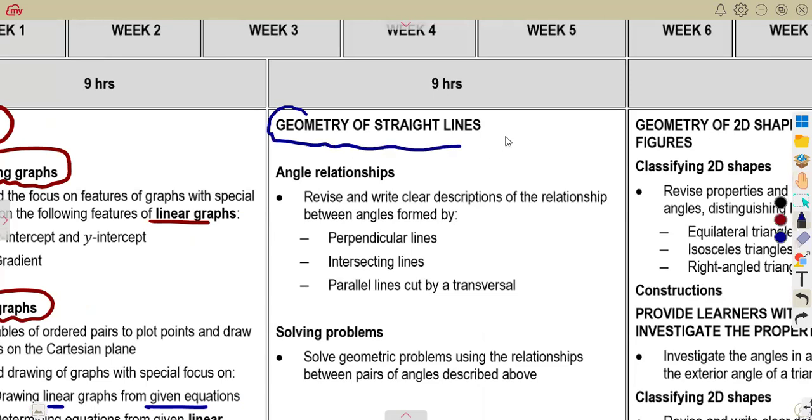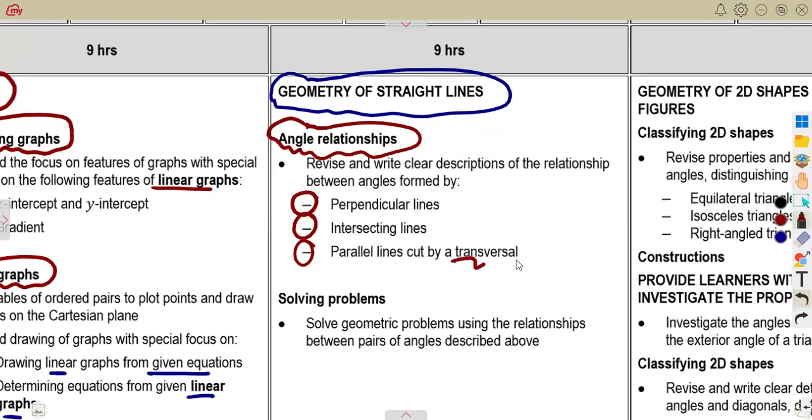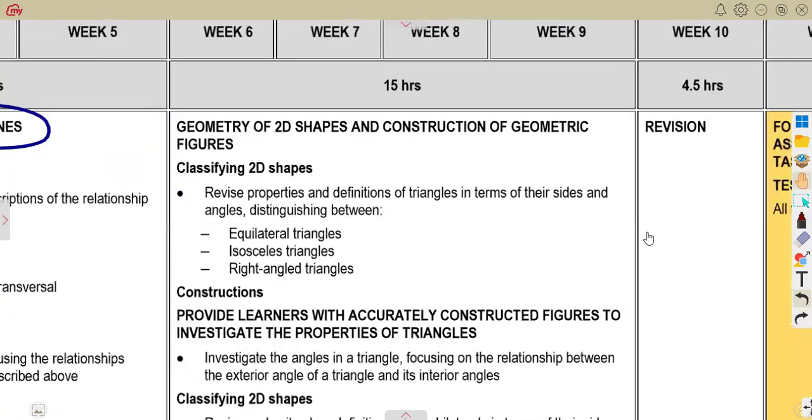The other topic that you're going to work with is the geometry of straight lines. You must be able to know how to operate with the angle relationships. Revise and write clear descriptions on the relationship between angles formed by perpendicular lines, intersecting lines, or parallel lines cut by a transversal. Remember from your grade eight you worked with parallel lines and the transversal line. Then solve geometric problems using relationship between pairs of angles described above, whether from intersecting lines or parallel lines. You must be able to solve problems, meaning it can be an equation formulated from there.